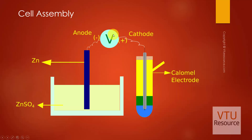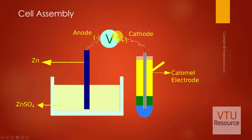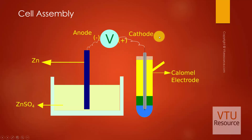So the connections were interchanged: zinc was connected to the negative terminal and the Calomel electrode to the positive terminal of the voltmeter. When this was done, the voltmeter showed a reading — that reading is the cell potential — and it was recorded. Since zinc is connected to the negative terminal, the zinc electrode acts as the anode, and since the Calomel electrode is connected to the positive terminal, it acts as the cathode.